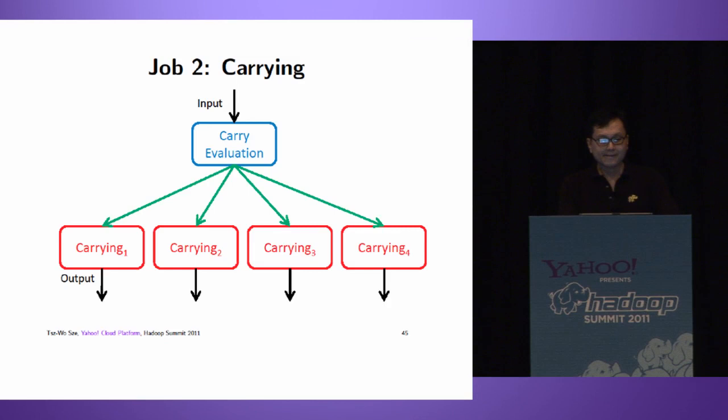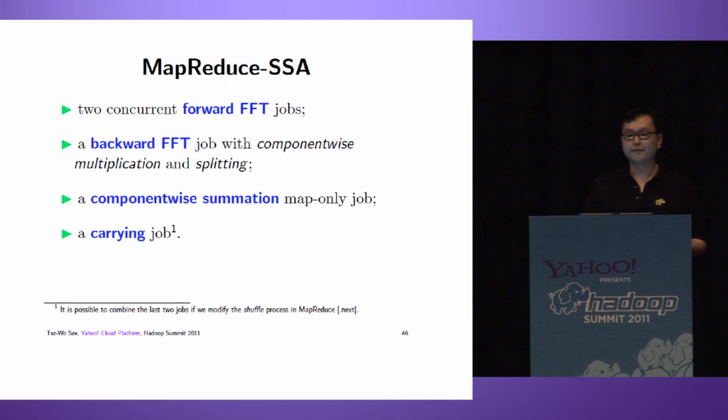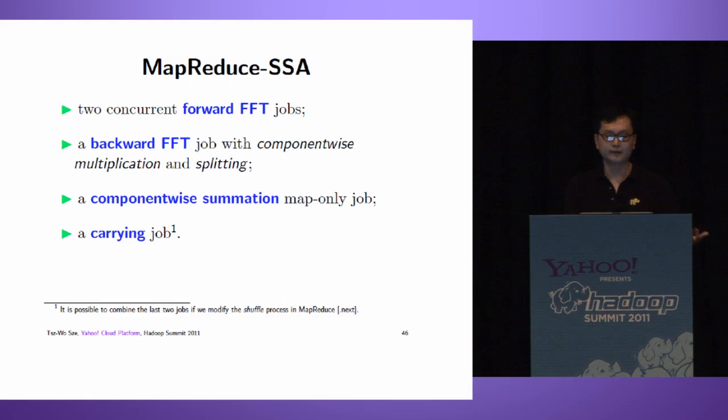Here is our MapReduce SSA. We have five jobs total. Two input integers, then perform two forward FFTs. Then perform backward FFT. In the map of backward FFT, we perform component-wise multiplication. In the reduce, before writing output to disk, we split it into three integers first. Once we have the split integers, we perform summation with two jobs: component-wise summation, then carrying.